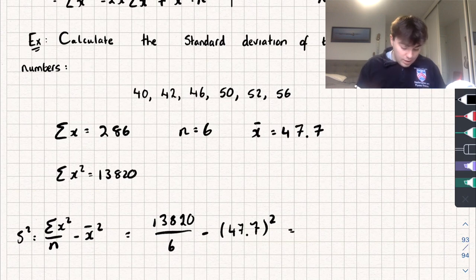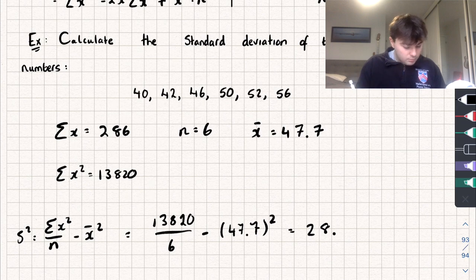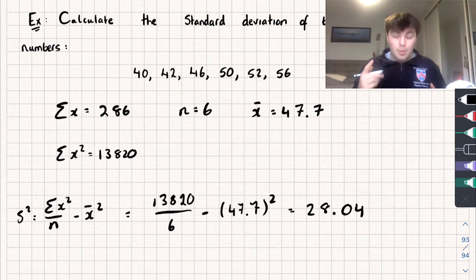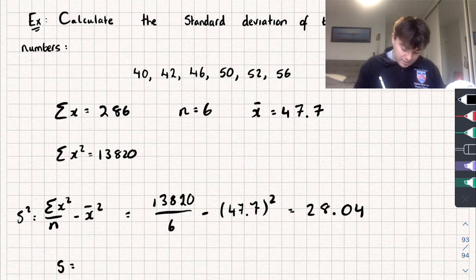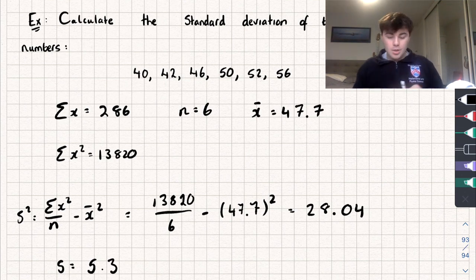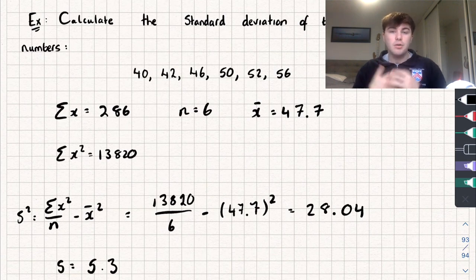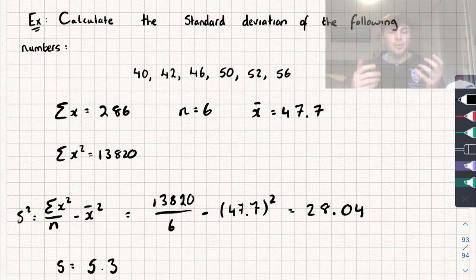Working that out, we get a variance equal to 28.04 to two decimal places. We wanted the standard deviation, which is the square root of the variance, so taking the square root of 28.04 gives a standard deviation s of approximately 5.3 to one decimal place. Hopefully this video was useful — if it was, like, subscribe and share, and go over to my channel for tons more maths tutorials. Thanks for watching.